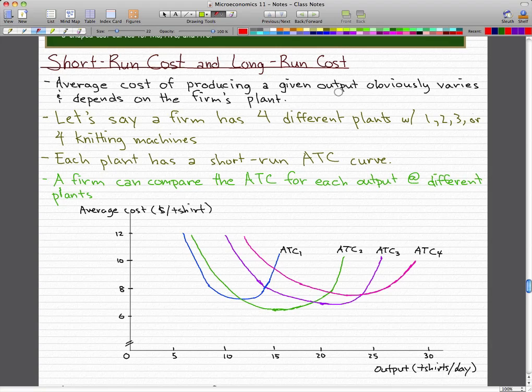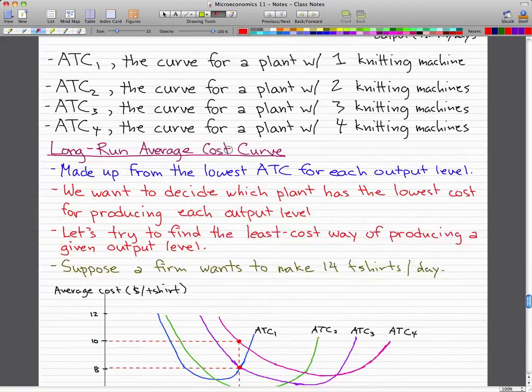So let's say that a firm has four different plants with one, two, three, or four knitting machines. Each plant has a short-run average total cost curve, and a firm can compare the average total cost for each output at different plants. So let's see, how should I describe this?